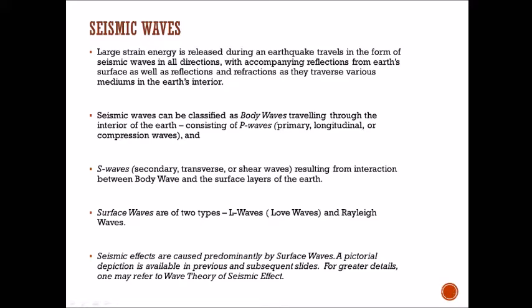Then there are S waves, also called secondary waves, transverse waves, or shear waves — resulting from the interaction between body waves and the surface layer of the earth. There will be a secondary transverse wave moving along with the compression P wave. Then there are surface waves, which travel along the surface only, originating due to certain complex phenomena.